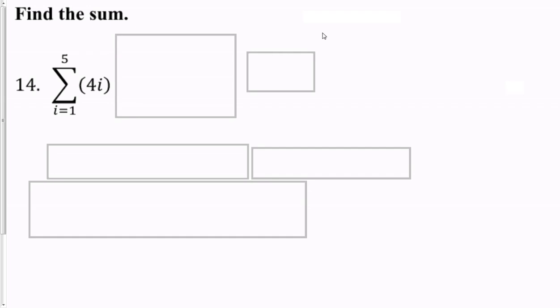So, problem 14, the terms 1 through 5 of 4i. Well, we could take out the 4 and put it in front, and that would be 4 times 1 through 5 of i. Well, what does that look like? That would be 1 plus 2 plus 3 plus 4 plus 5. Add those together. 1 through 4 add equal 10, plus 5, we've got 15. 15 times 4 is 60.